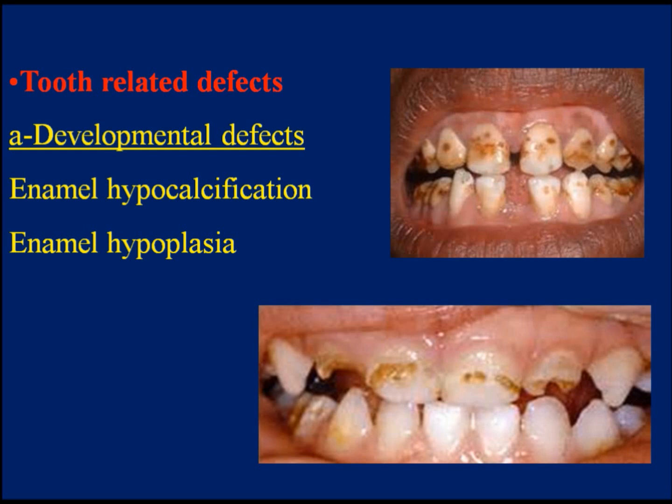Tooth-related defects. A. Developmental defects. Enamel hypocalcification: the enamel surface is intact with distinct white to brown areas on the facial surface of the tooth. Enamel hypoplasia: the enamel surface is defective and porous. It may be hereditary, as in amelogenesis imperfecta, or due to infection, tumors, or trauma, causing improper mineralization. Treatment can start with bleaching, followed by conservative treatment to repair the porous surface.